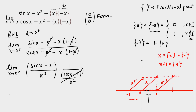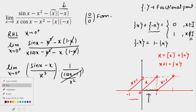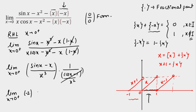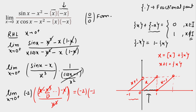This remaining limit is x tending towards 0 positive of [sin(x) − x]/x³. It's a 0/0 form, so I use the Taylor expansion of sin(x) = x − x³/3! + ⋯. The x terms cancel, leaving −x³/6 divided by x³, giving −1/6. Multiplied by −1/2 (from before) gives 1/3. So the right-hand limit RHL = 1/3.